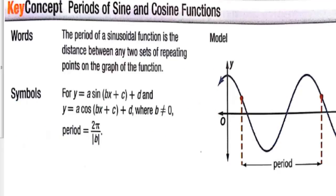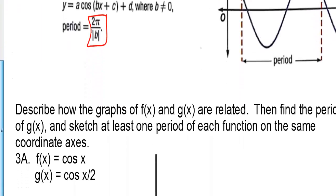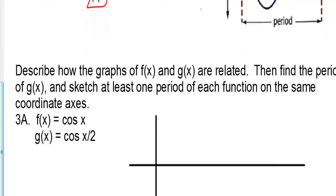Periods of the sine and cosine function. The period of a sinusoidal function is the distance between any two sets of repeating points on the graph of the function. If you pick a point on the wave and get back to that same point from above, that's one period of the graph. For y equals a·sine(bx + c) + d and y equals a·cosine(bx + c) + d, where b does not equal zero, the period is 2 pi over the absolute value of b, because 2 pi is the normal period for sine and cosine.